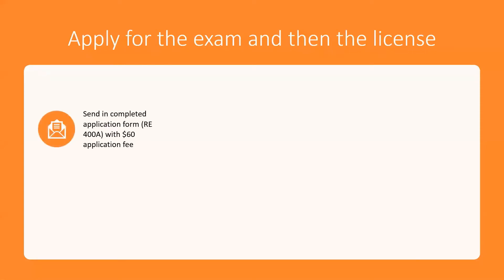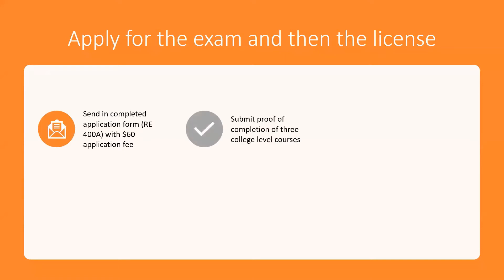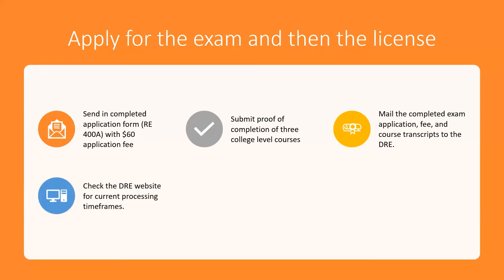Applying for the exam first and then the license: you start by sending in your application with a $60 fee to take the test. You also have to submit proof that you've completed the three college-level courses required to get a license. You mail everything — the fee, your transcripts, all of that — to the California Department of Real Estate. They will then, after about four to five weeks, post it on their website and you can get an idea of when you're going to take the test.